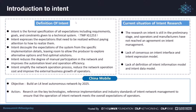For the current situation of intent research, the research on intent is still in a preliminary stage and operators and manufacturers have not reached an agreement on intent management, nor a consensus on intent interface and intent expression model, nor a definition of intent information model and intent data model. For China Mobile, our objective is to build an L4-level autonomous network by 2025. We research on the key technologies, reference implementation and industrial standards of intent network management to ensure that the operation of the network meets the overall expectations of operators.